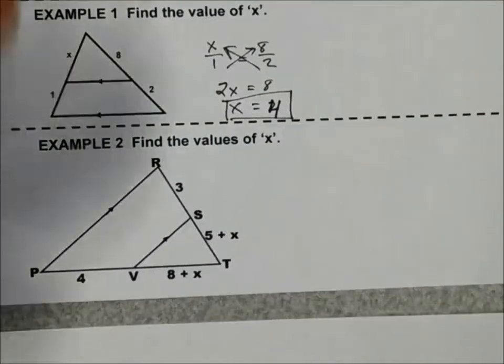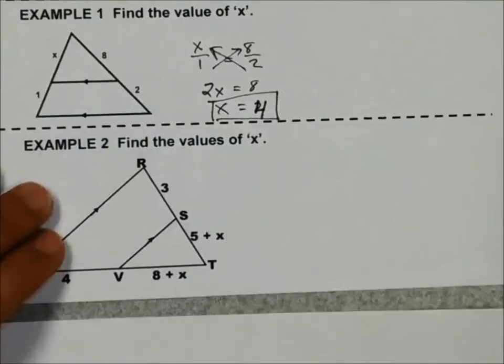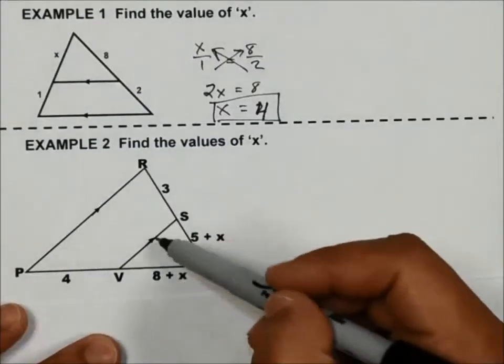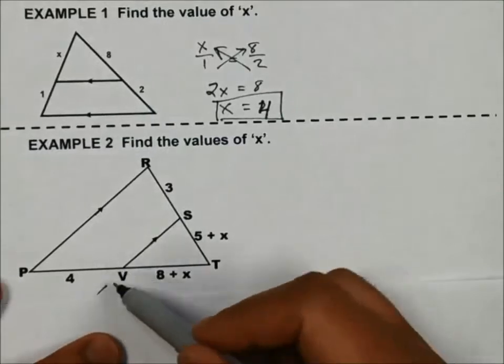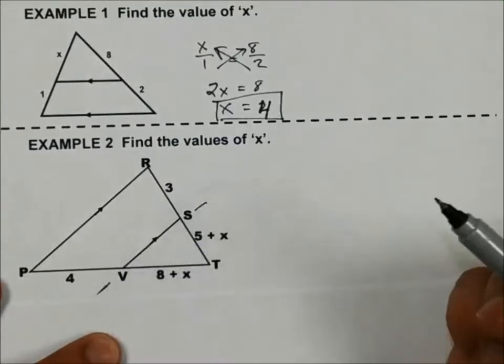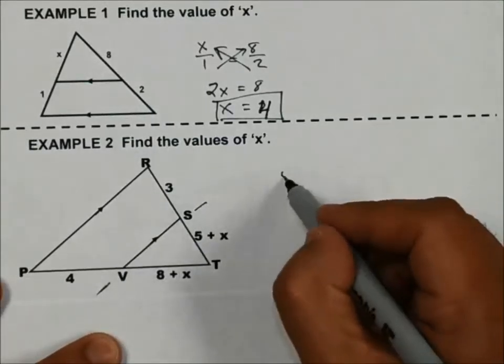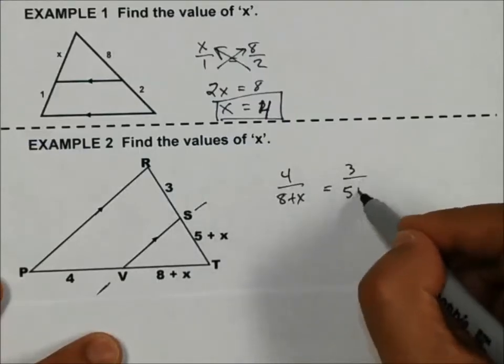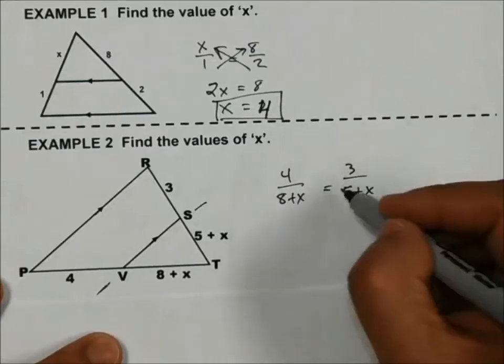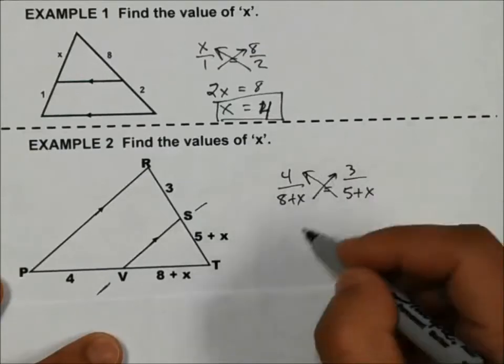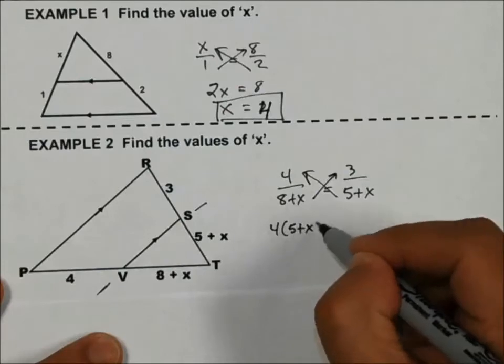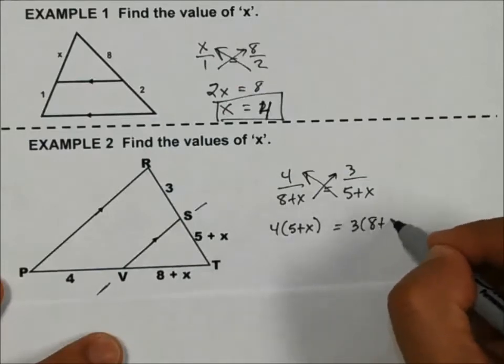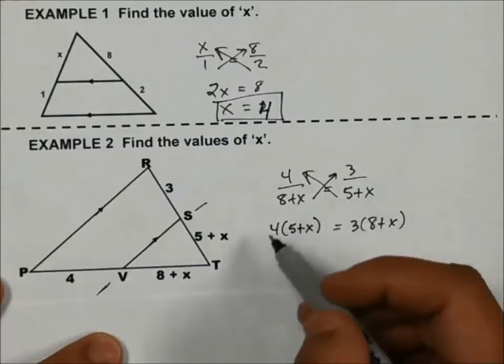Next example, same idea. I have the parallel lines here. So this line, if I extend it out, that's going to tell me my proportions. So I could go 4 over 8 plus X equals 3 over 5 plus X. Then I want to do my cross products. 4 times 5 plus X equals 3 times 8 plus X. I did this so you remember to distribute, that's going to be 20 plus 4X equals 24 plus 3X.